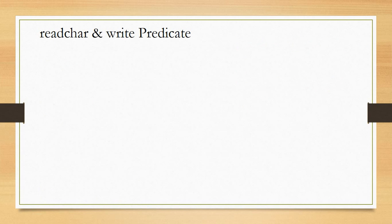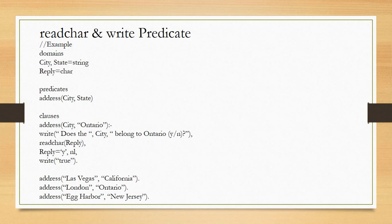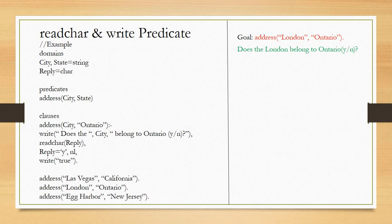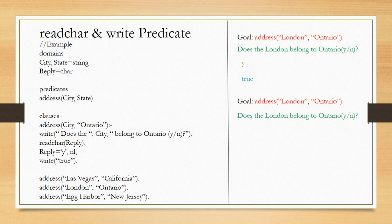Now taking another example for read_character and write — the same city/state setup, but instead of reply being a string, it is now of character type. So read_character(reply) replaces read_ln(reply), and the fact becomes reply = 'y'. If the goal address(london, ontario) is called and the user types 'y', it matches and the rule is true. If 'n' is typed, it contradicts the fact and the rule becomes false.